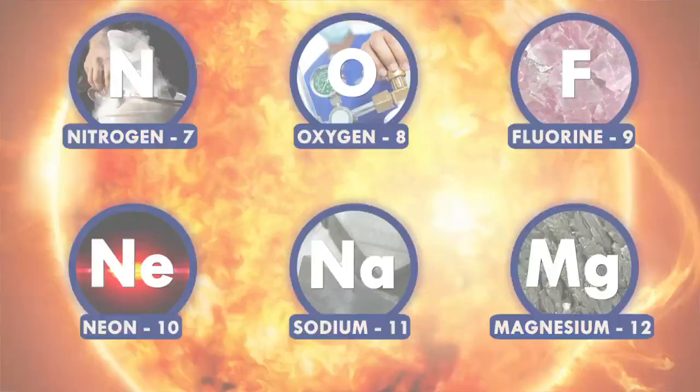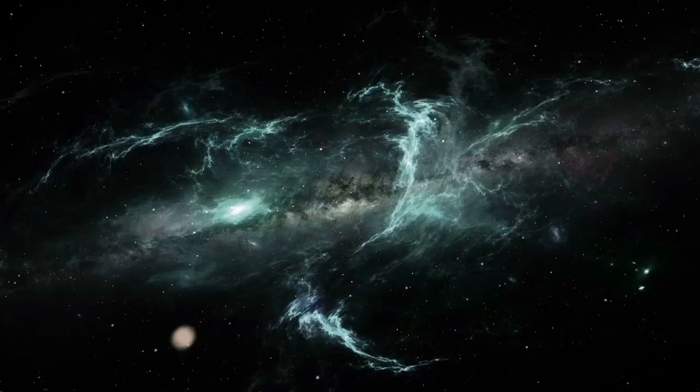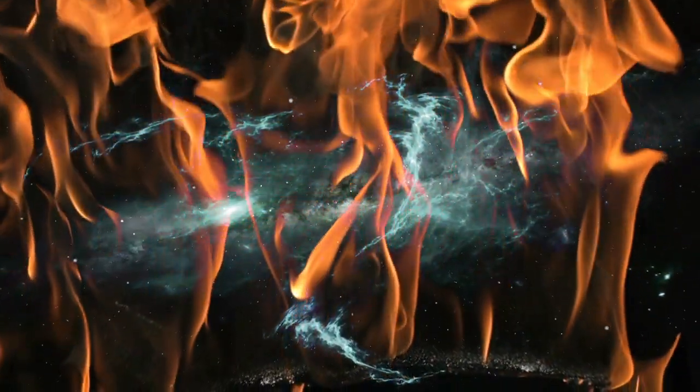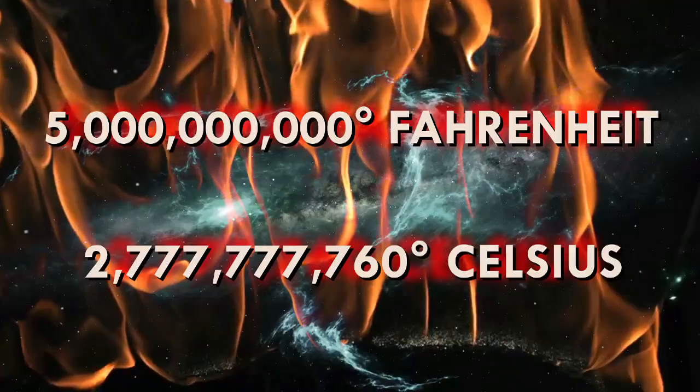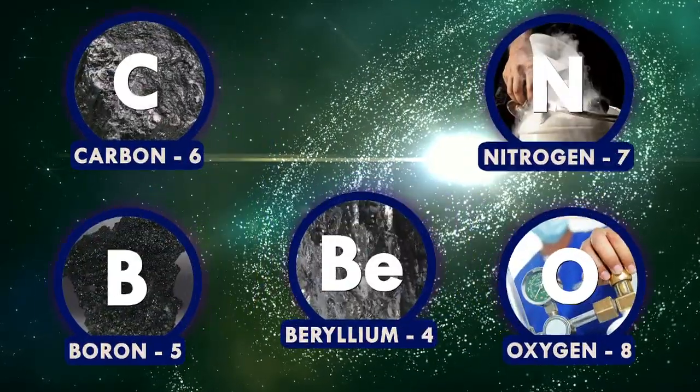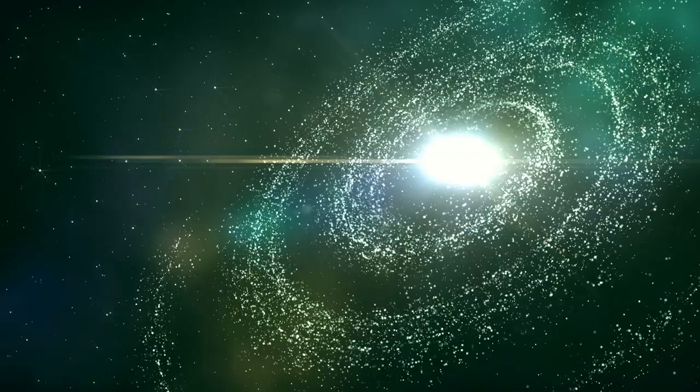Alright, by this point, the stars are burning hot. And by hot, I mean hot. The biggest stars are burning around five billion degrees. So, as the stars burn, this snowball effect where stars burn off lighter elements and start fusing heavier ones together keeps on rolling.